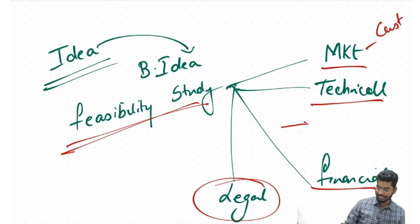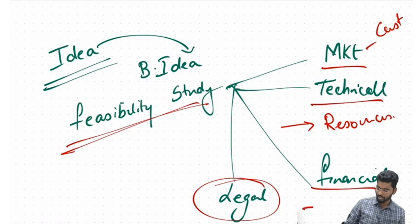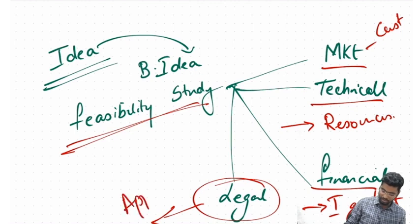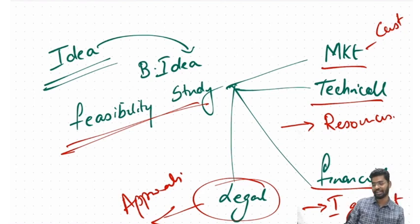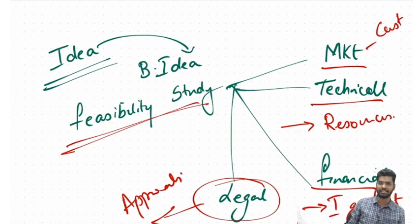Market feasibility asks: are there customers for my product? Technical asks: do I have resources for my product? Financial asks: am I going to get my money back and a return on the product? Legal asks: whether there are necessary approvals to start my idea. For example, you cannot start manufacturing worms if the government of India bans you from doing so, even if you have customers, resources, and money.